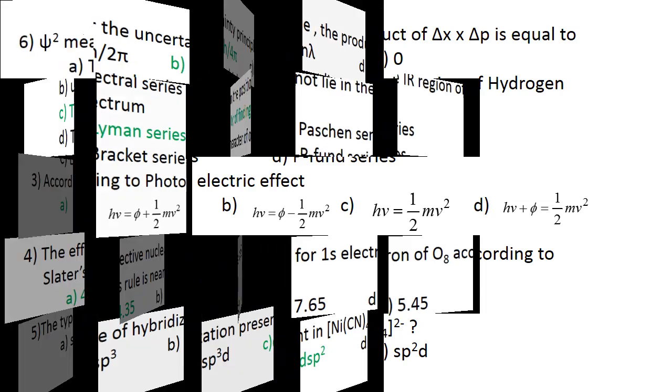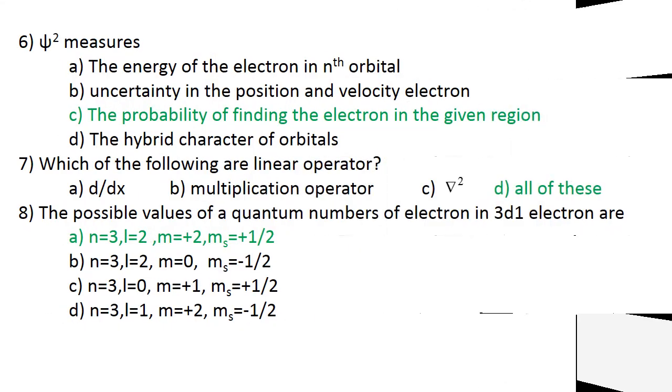Question number 6: Psi squared measures the probability of finding the electron in the given region. C is the correct answer. Which of the following are linear operators? d by dx, multiplication operator, as well as del square. All of these are linear operators.